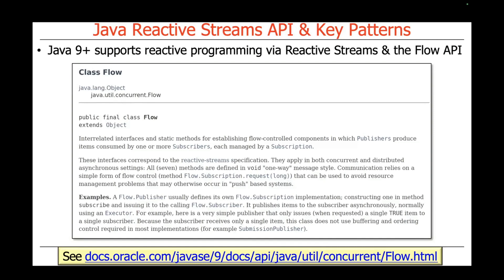Java 9, and everything since then, supported reactive programming via something called the Flow API. The Flow API is a class that contains a bunch of interrelated interfaces and some static methods for establishing flow-controlled components where publishers can produce items and send them to subscribers, which will consume them. There's a particular entity called a subscription that mediates the interaction between those in a flow-controlled environment.